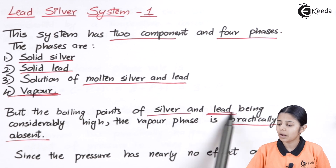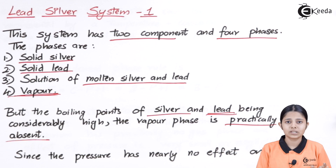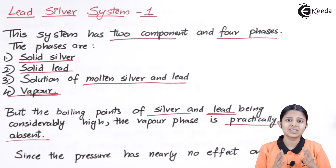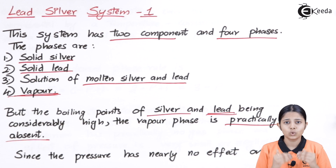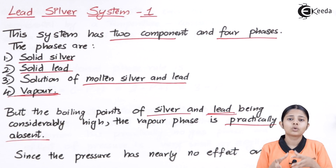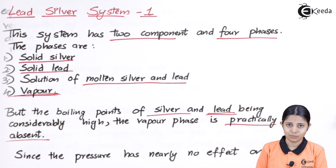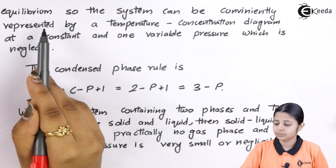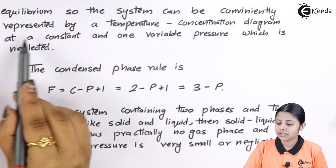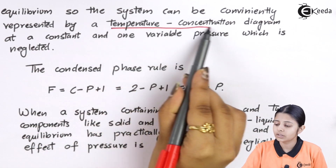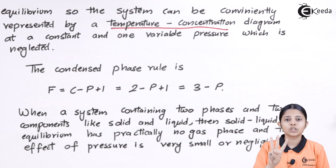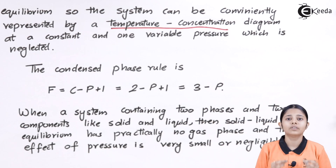The same applies to lead (plumbum). Converting lead from solid to liquid is already difficult, and reaching temperatures high enough to convert liquid lead to its gaseous form is practically impossible. So the vapor phase can be neglected. Pressure has no effect on the equilibrium of this system, meaning it can be conveniently represented by just two variables: temperature and concentration.